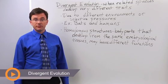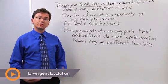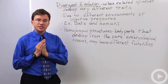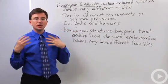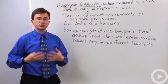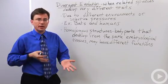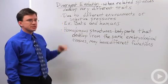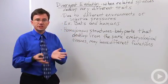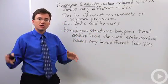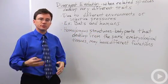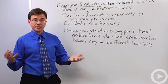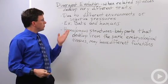One of the common trends seen in evolution is something called divergent evolution, and that's when two related species diverge and wind up looking very different. They'll have different traits, even though they may be pretty closely related. This happens because the two new species, or the two related species, are under the influence of different environments or under the influence of different natural selective pressures.